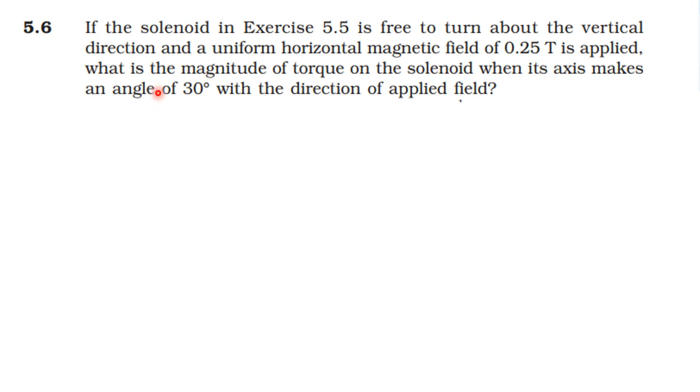Magnetism and Matter Topic Learned. Exercise 5.6 question: If the solenoid in exercise 5.5 is free to turn about the vertical direction and a uniform horizontal magnetic field of 0.25 Tesla is applied, what is the magnitude of torque on the solenoid when its axis makes an angle of 30 degrees with the direction of the applied field?